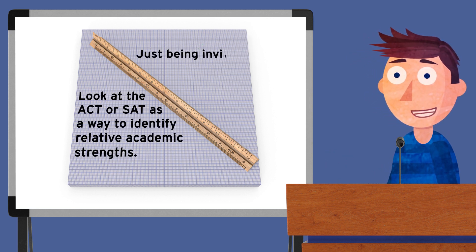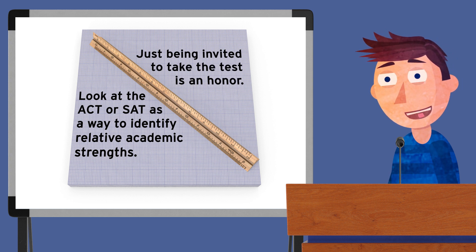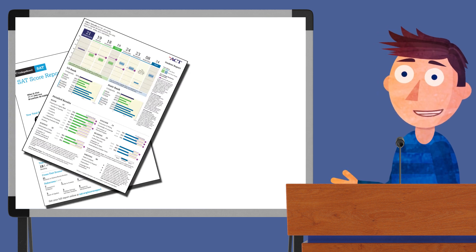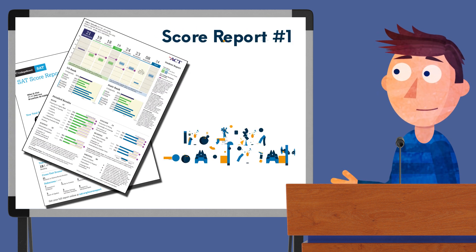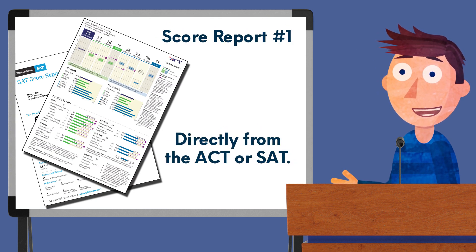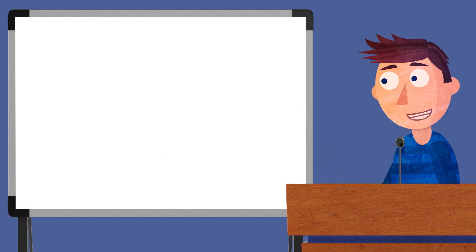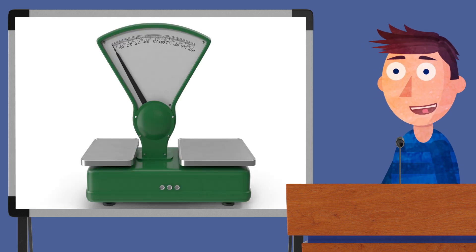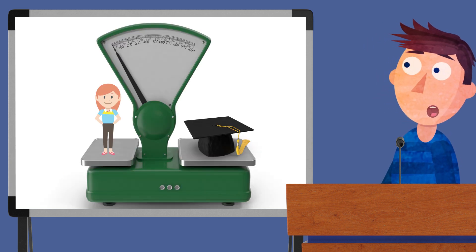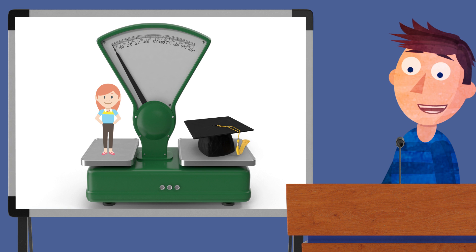Just being invited to take the test is an honor in and of itself. You're going to have access to two different score reports. The first one comes directly from the ACT or SAT testing agencies and not from DukeTip. It should arrive in your mailbox six to eight weeks after you take the test. This score report is going to compare your scores to those of typical high school juniors and seniors.